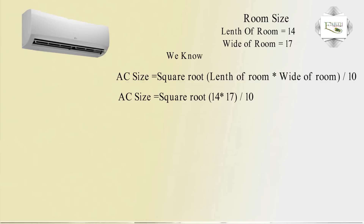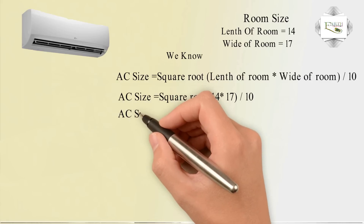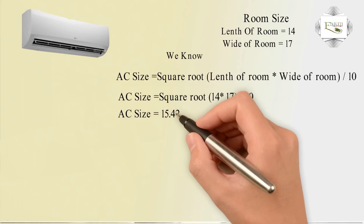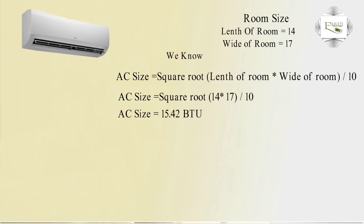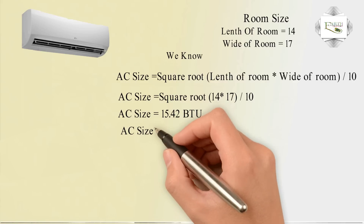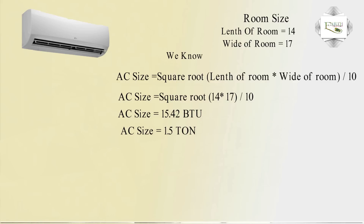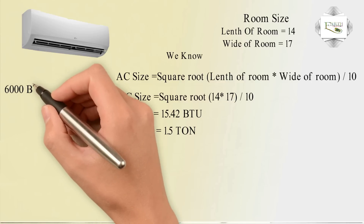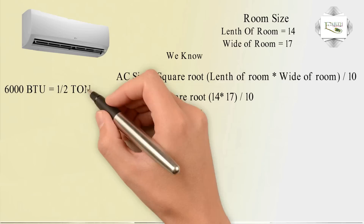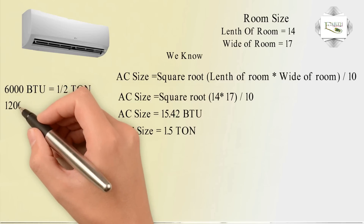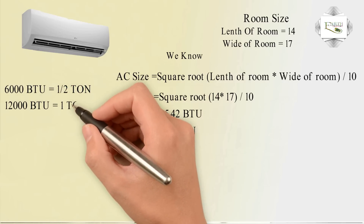Length 14 feet, width 17 feet, divided by 10 feet. AC size equals 15.42, so AC size equals 1.5 ton. Reference: 6,000 BTU equals half-ton AC; 12,000 BTU equals 1-ton AC.